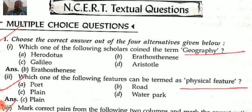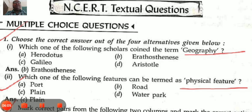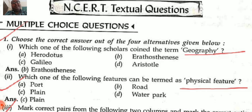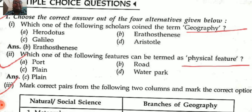Next question: which of the following features can be termed as physical features? Physical features means naturally made. The options are port, road, plain, and water park. The answer is plain — option C — because it is a naturally formed feature.